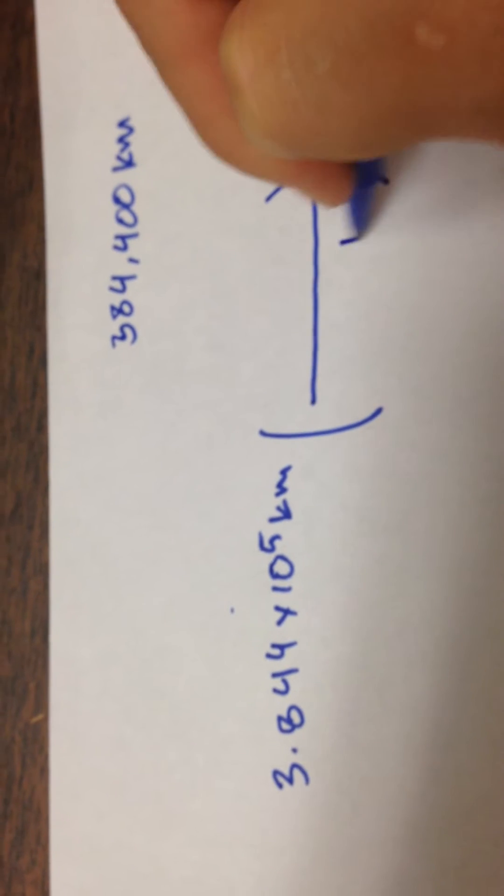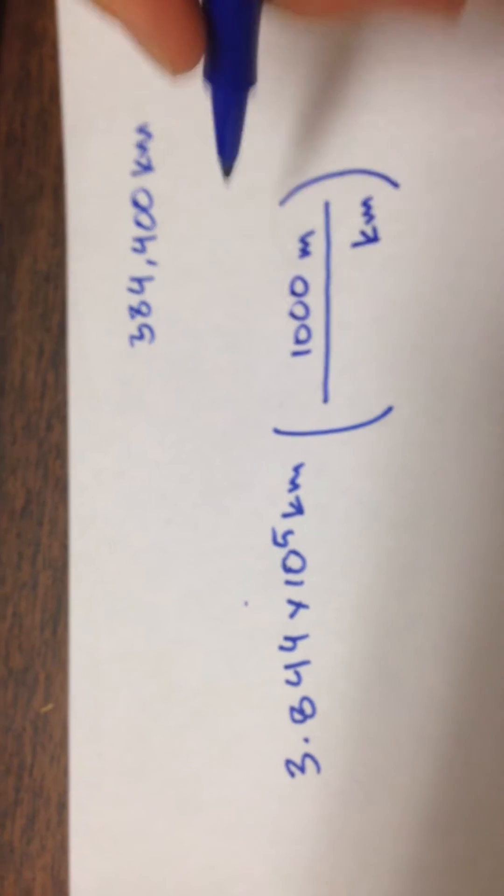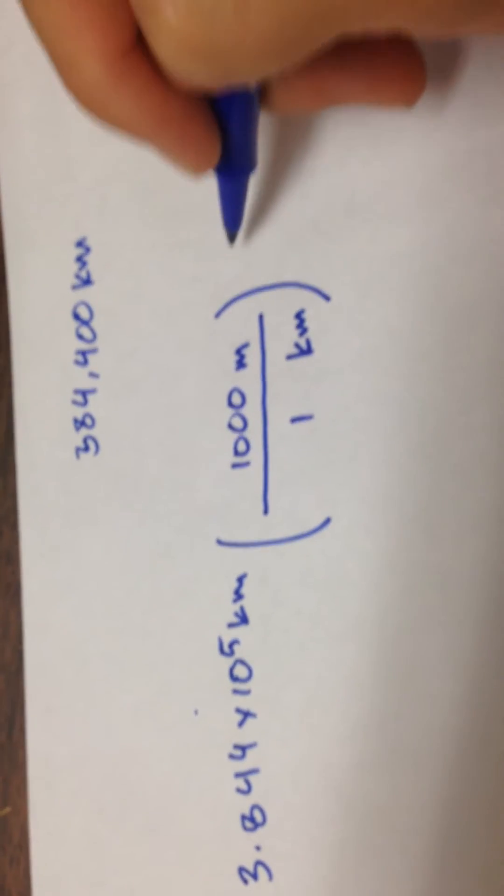Speed of light is in meters. So I'm going to convert my kilometers to meters. There is a thousand meters in one kilometer. Beautiful.